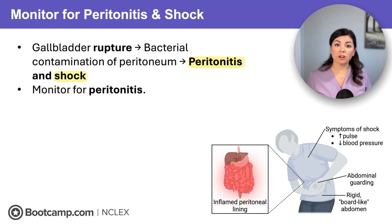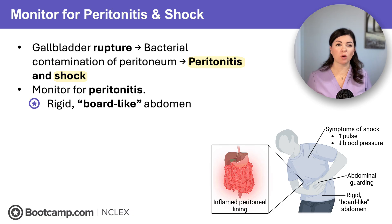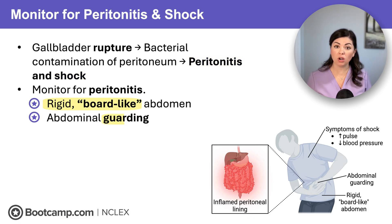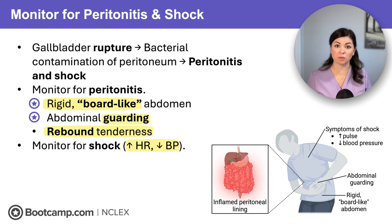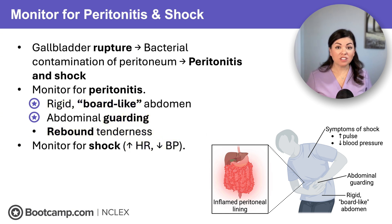Monitor clients for signs of peritonitis, which include a rigid board-like abdomen, abdominal guarding, and rebound tenderness. We'll also see systemic findings such as increased heart rate and decreased blood pressure. Remember on NCLEX, peritonitis findings like a rigid abdomen are always a high priority that requires immediate intervention.